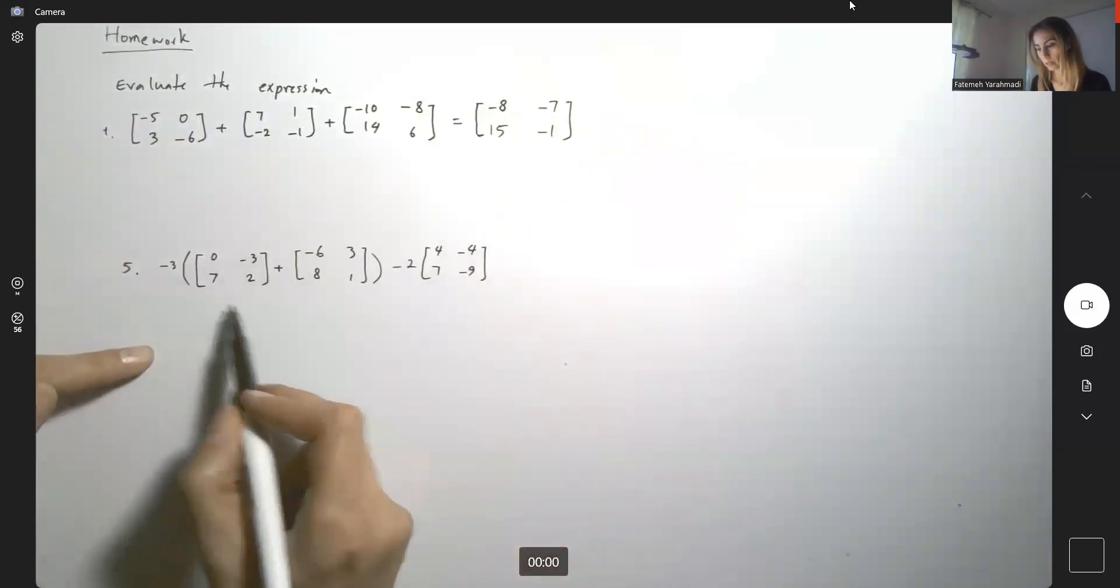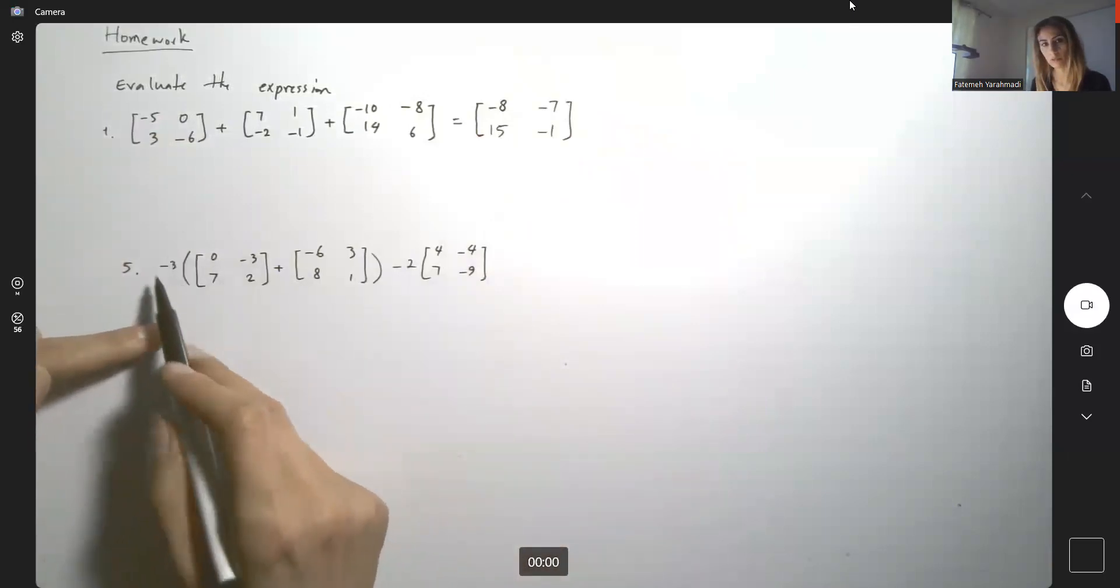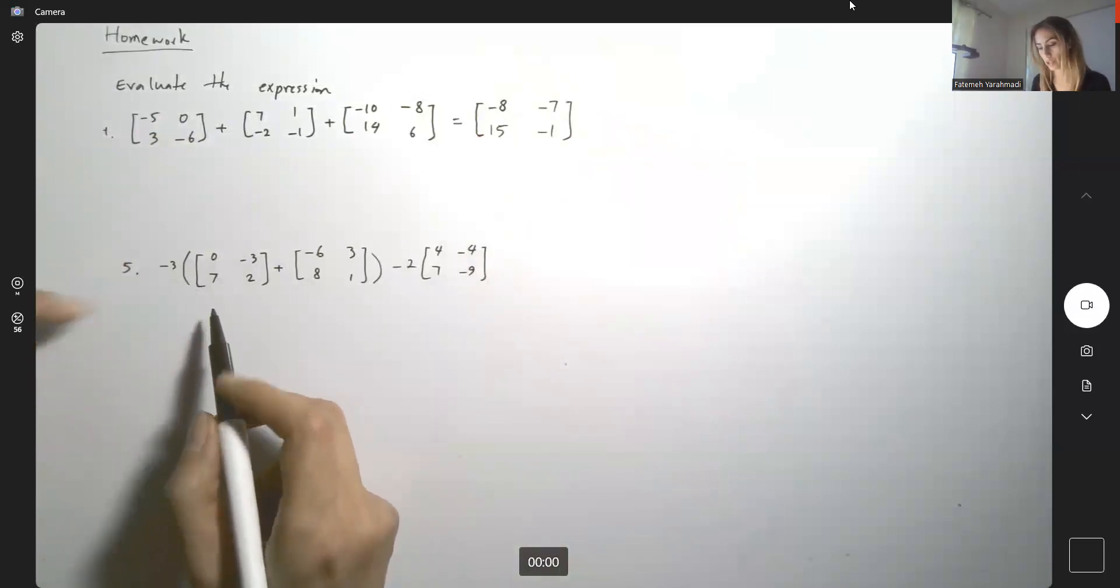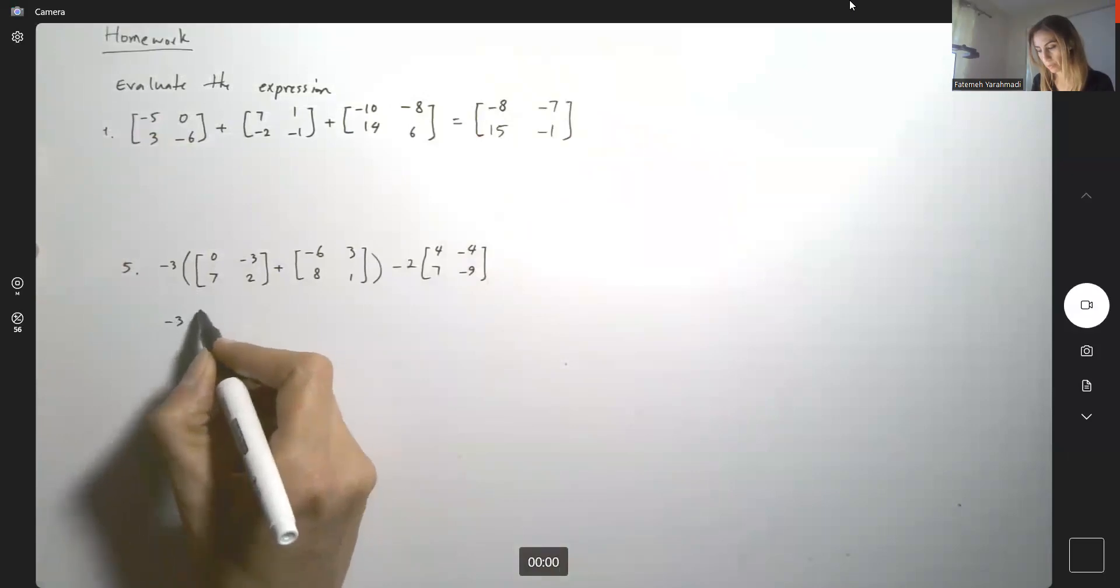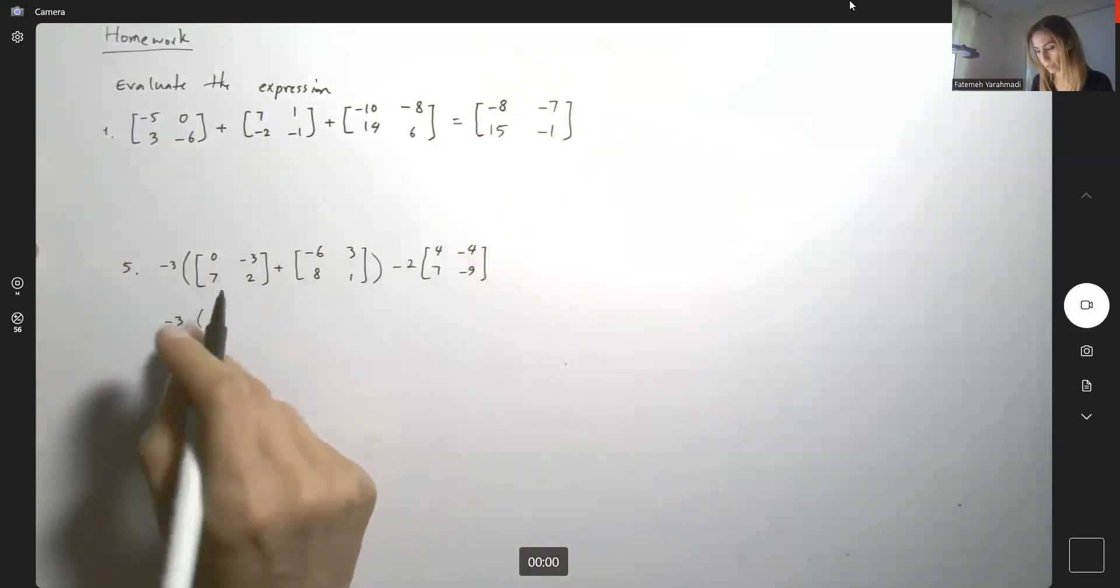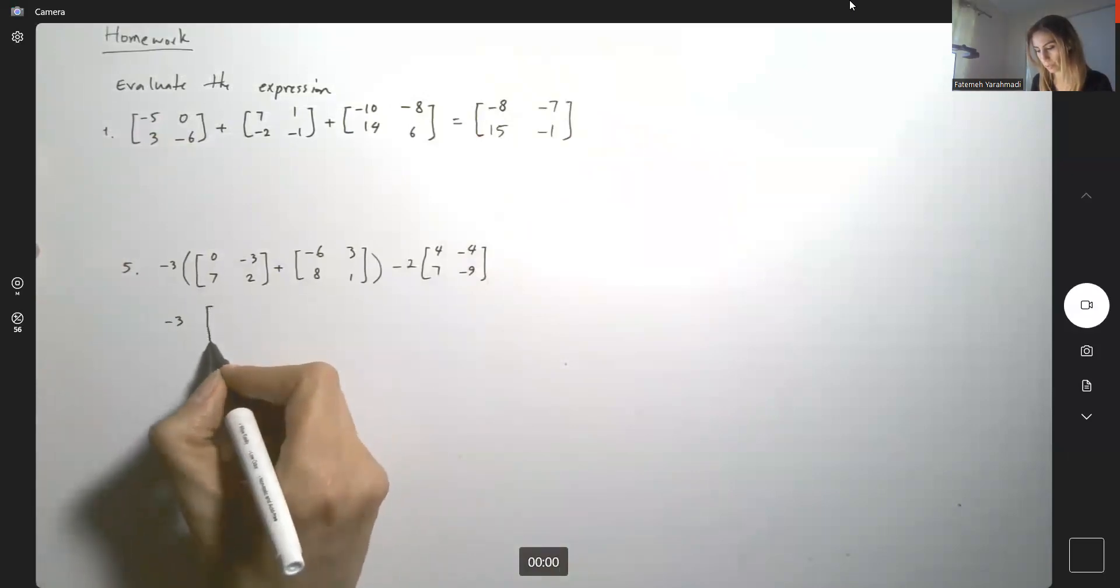For this guy, you're going to add these two and then multiply by negative scalar multiplication. So we're going to have negative 3 and then you're going to have this matrix here. Let's just escape from the parentheses, we don't need it.